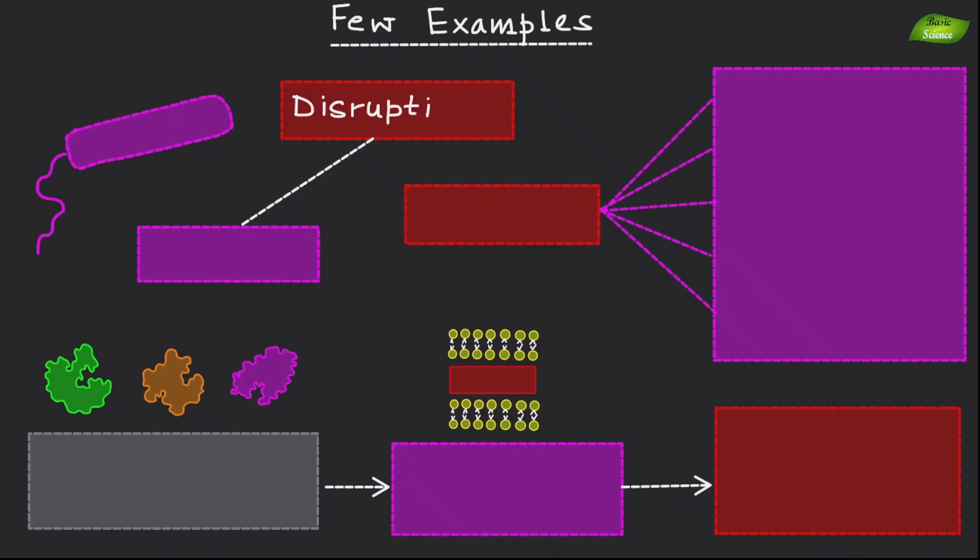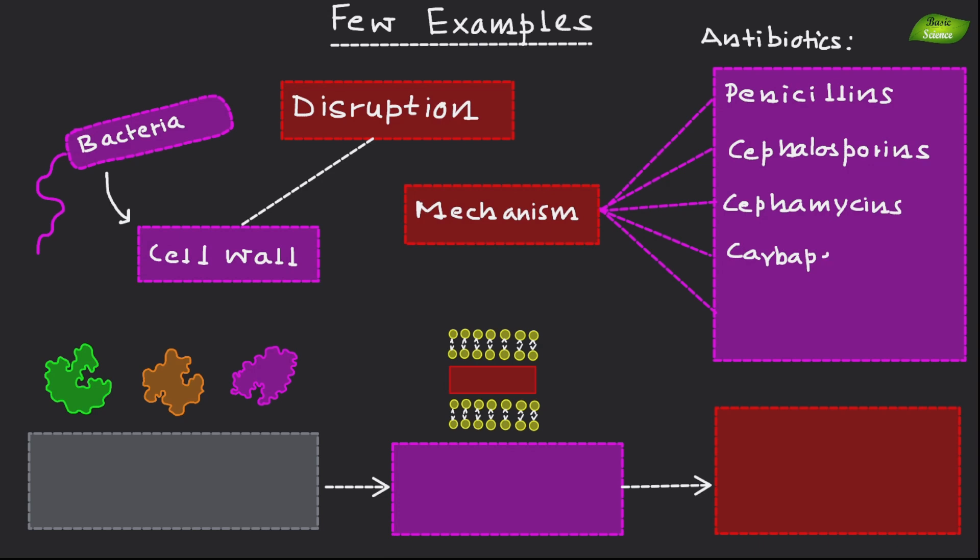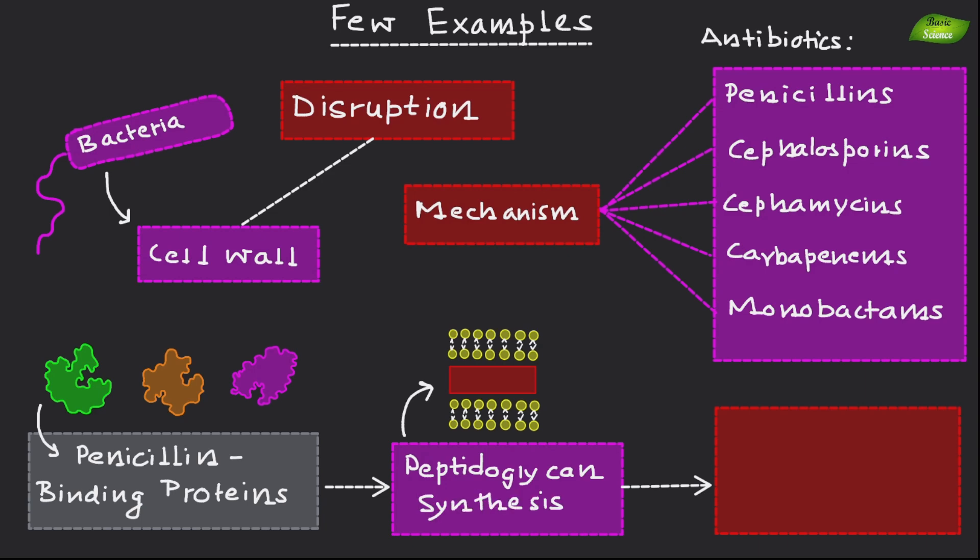The disruption of bacterial cell walls is a crucial mechanism employed by various antibiotics. Penicillins, cephalosporins, carbapenems, and monobactams are all beta-lactam antibiotics that bind to penicillin binding proteins and enzymes responsible for peptidoglycan synthesis, therefore inhibiting the cell wall construction.